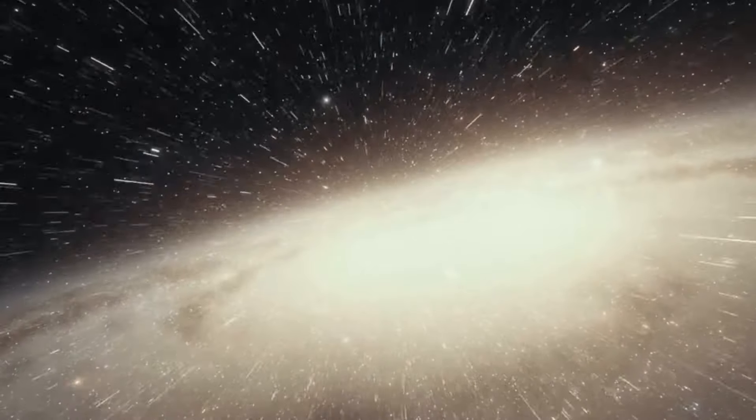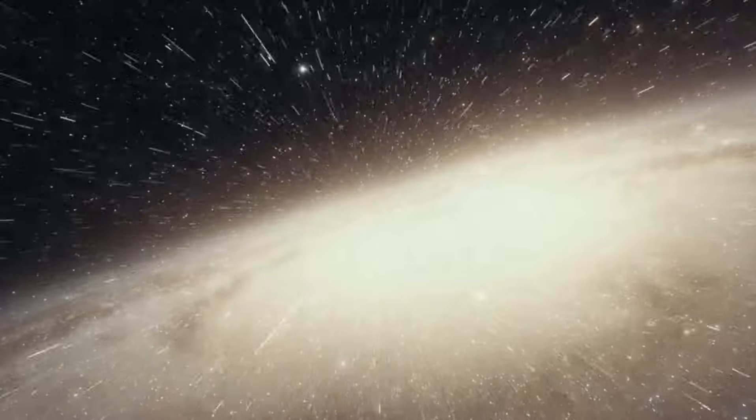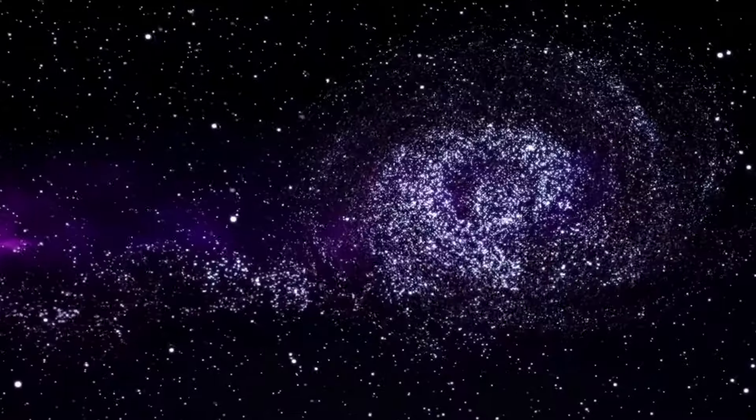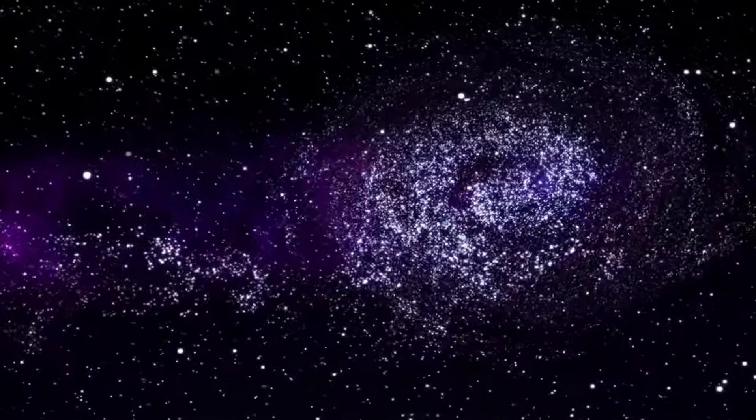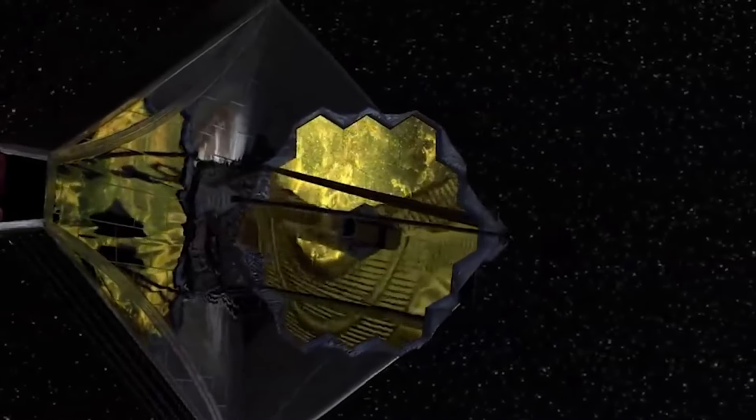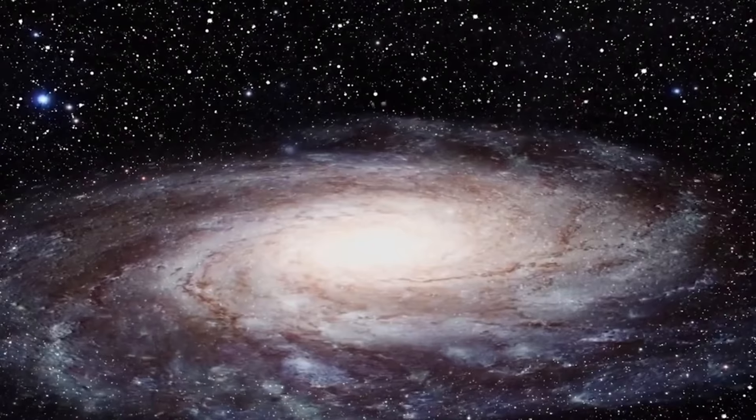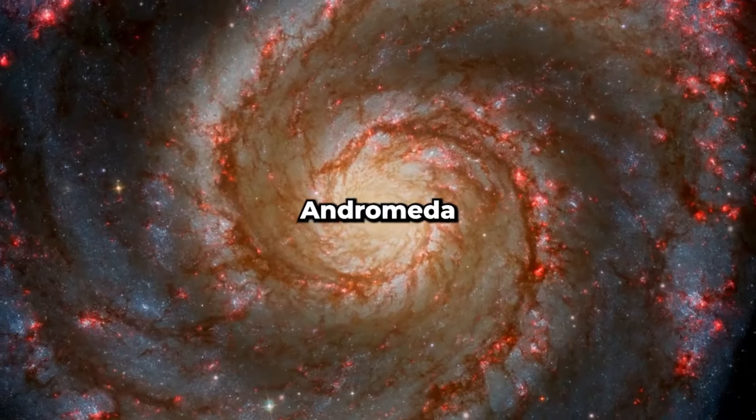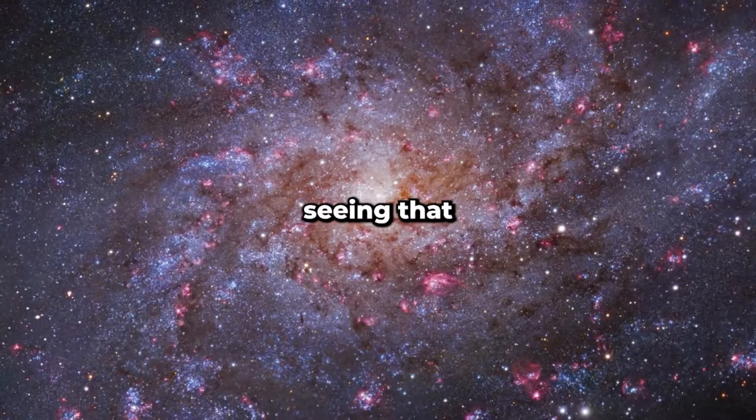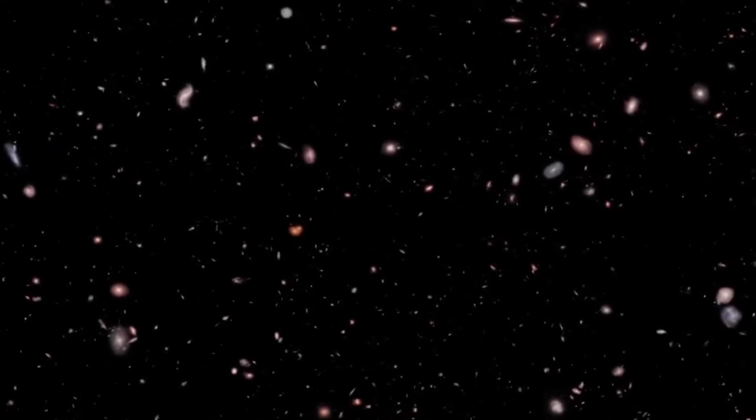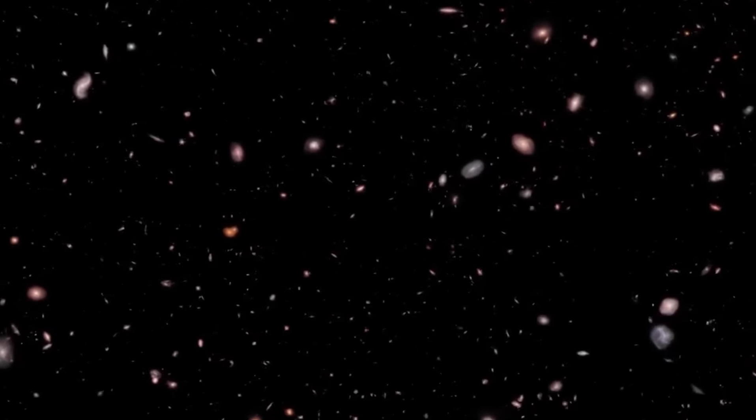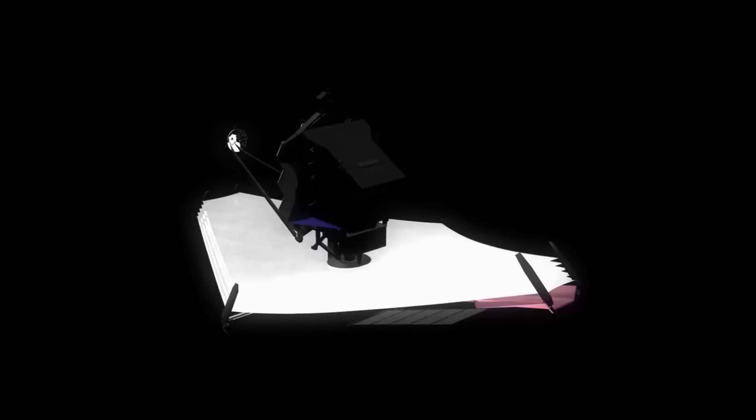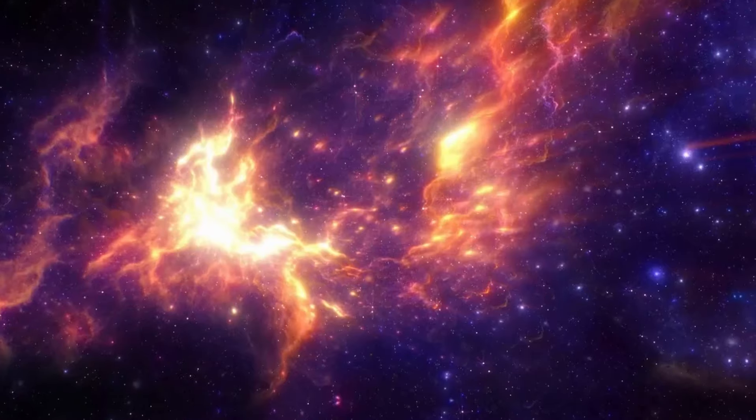Not only does dark matter seem to affect the way stars move within Andromeda, but it also extends way beyond what they can see with telescopes. It forms a sort of invisible circle around the galaxy, influencing the movement of smaller galaxies and star clusters that orbit Andromeda. It turns out there's a lot of it, stretching out for millions of light years from the galaxy's center.